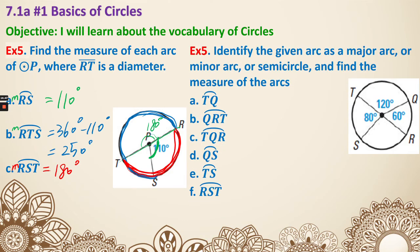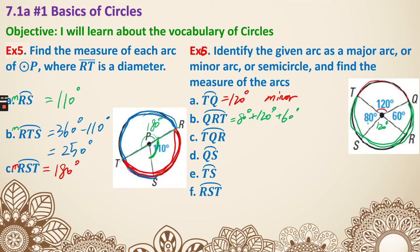Last, example six: identify each given arc as a major arc, minor arc, or semicircle, and find its measure. Arc TQ - the central angle is 20 degrees, so it is a minor arc measuring 20 degrees. Arc QRT - looking at this larger portion, we add the relevant central angles: 80 plus 120 plus 60 equals 260 degrees - wait, that comes to 240 degrees, and since it's bigger than 180, that is a major arc.